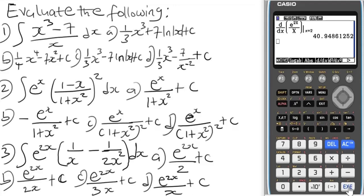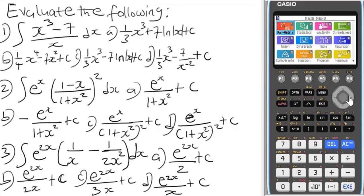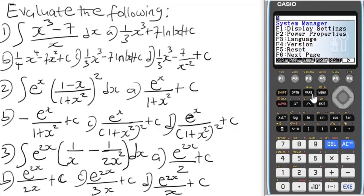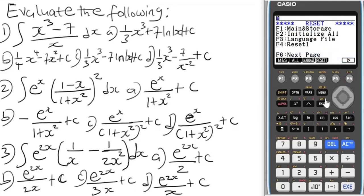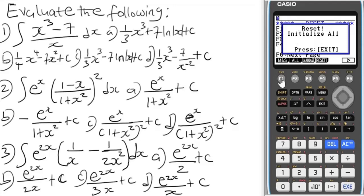Don't forget to clear your calculator when you're done. Press Exit to delete everything, then go to Menu, navigate to System and press EXE. Press Reset with F5, go to next page with F6, press Initialize with F2, then F1 to confirm. The calculator will reset and wipe out everything, and you'll be good to go.